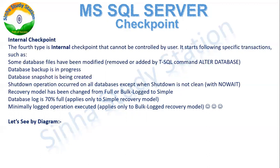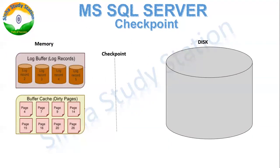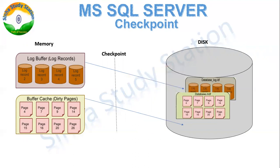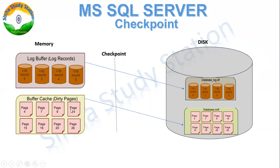Now let's look at the diagram to understand how checkpoints work. We have a log buffer containing log records and a buffer cache containing dirty pages. The checkpoint process writes data to our physical hard disk: the log buffer (log records) is written to the log file (LDF), and the buffer cache (dirty pages) is written to the data file (MDF). This transfer to physical disk is what the checkpoint accomplishes.